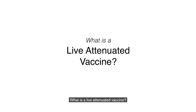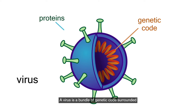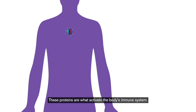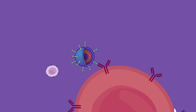What is a live attenuated vaccine? A virus is a bundle of genetic code surrounded by a shell of proteins. These proteins are what activate the body's immune system.